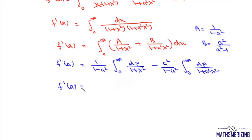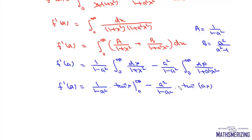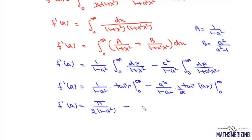So f'(a) equals 1/(1−a²) times [tan⁻¹(x)] from 0 to ∞, minus a²/(a·(1−a²)) times [tan⁻¹(ax)/a] from 0 to ∞. The a's cancel in the second term. Now tan⁻¹(∞) = π/2 and tan⁻¹(0) = 0, so the first bracket gives π/2. For the second term, as x→∞, tan⁻¹(ax) depends on the sign of a.